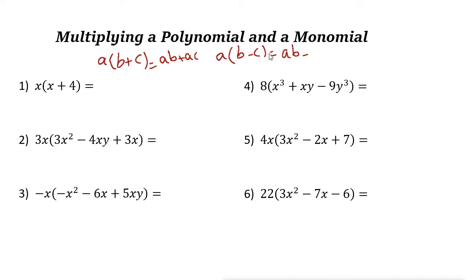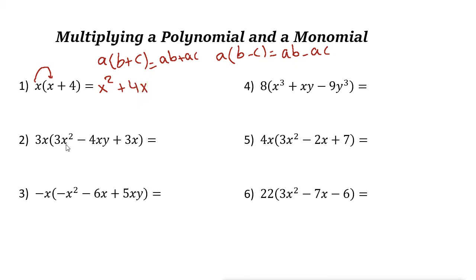Let's take a look at these examples. Using the distributive property: x times x is x squared, plus x times 4 is 4x.